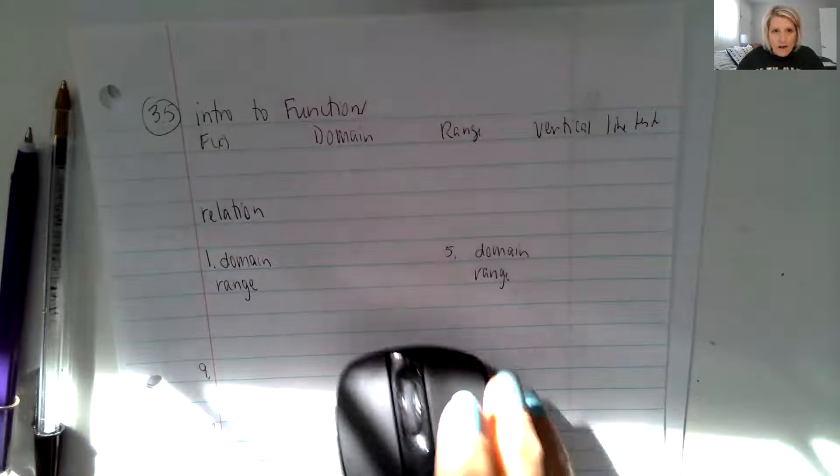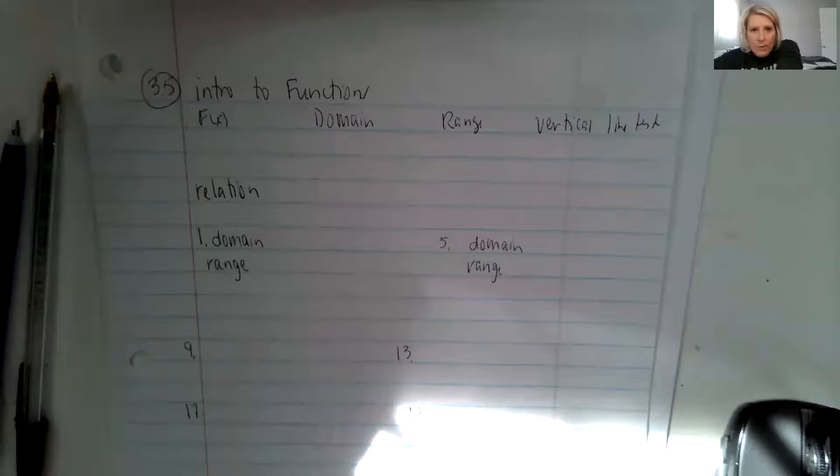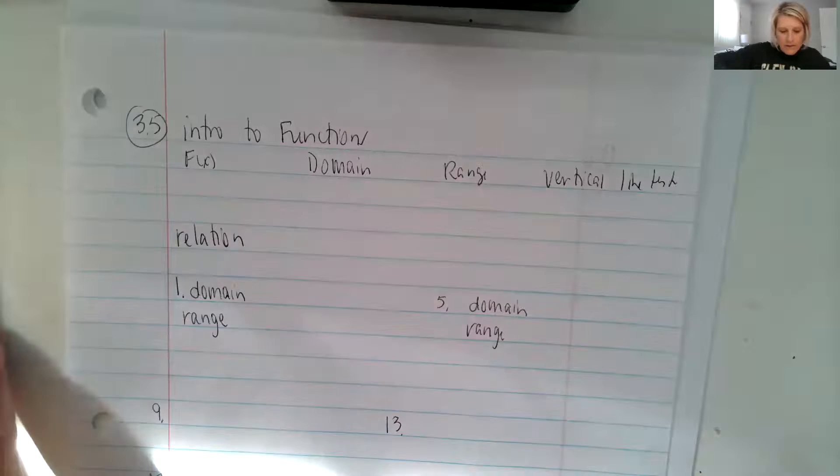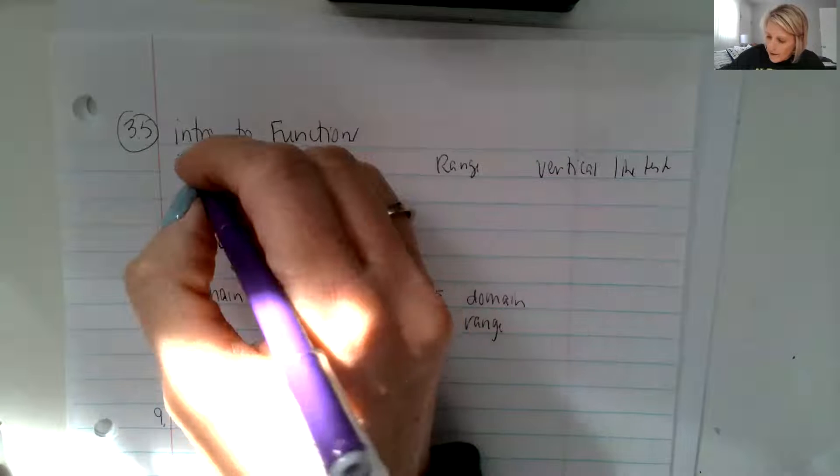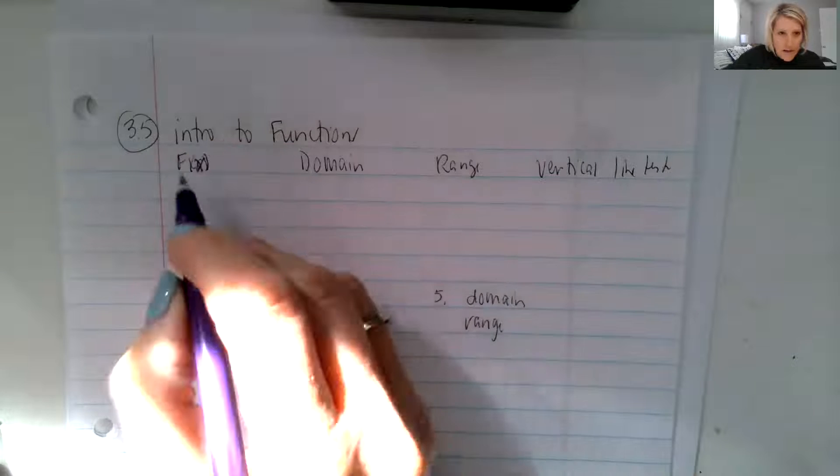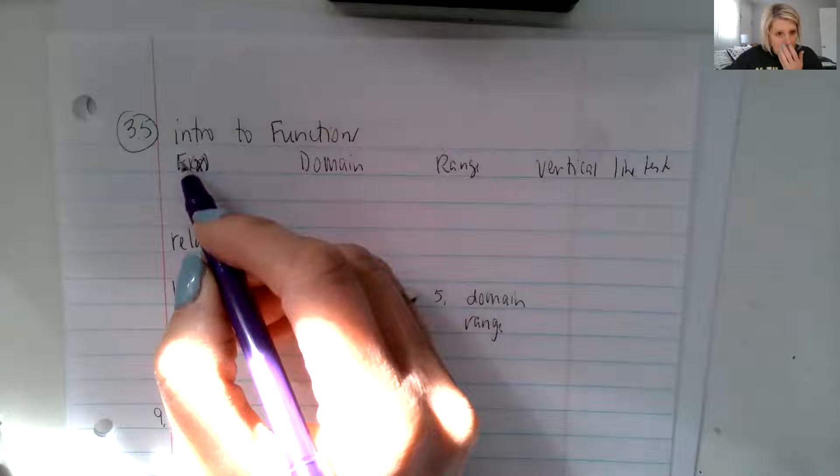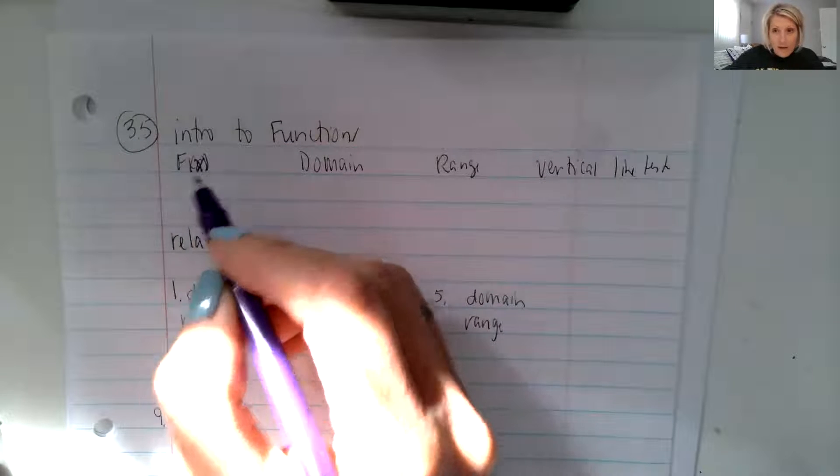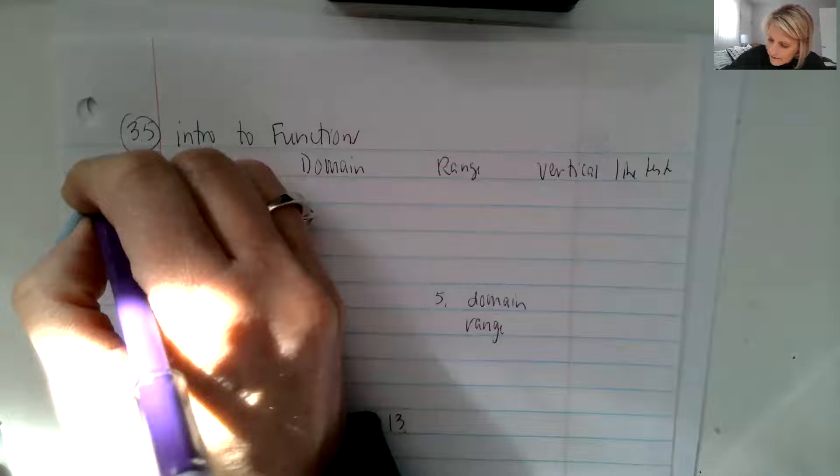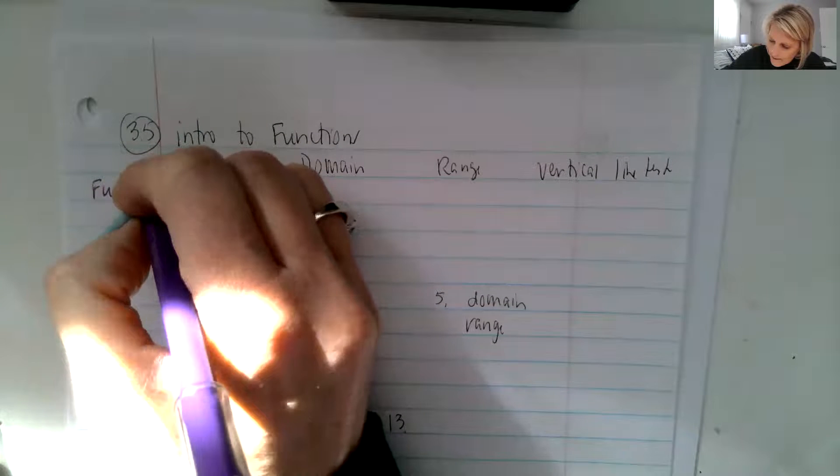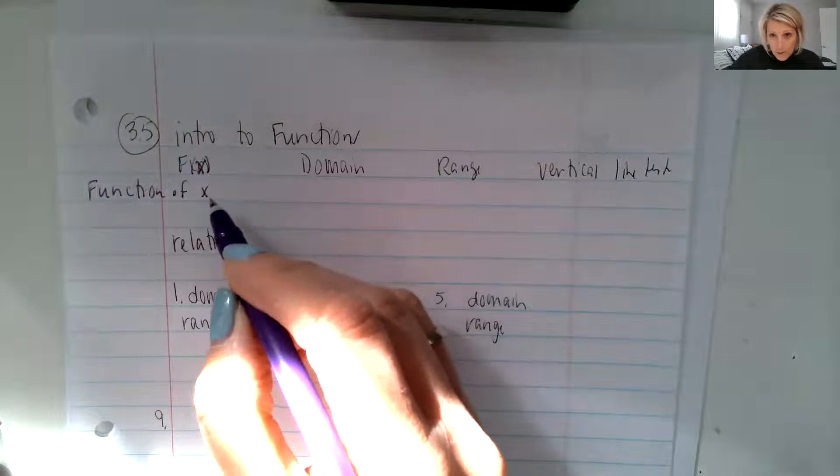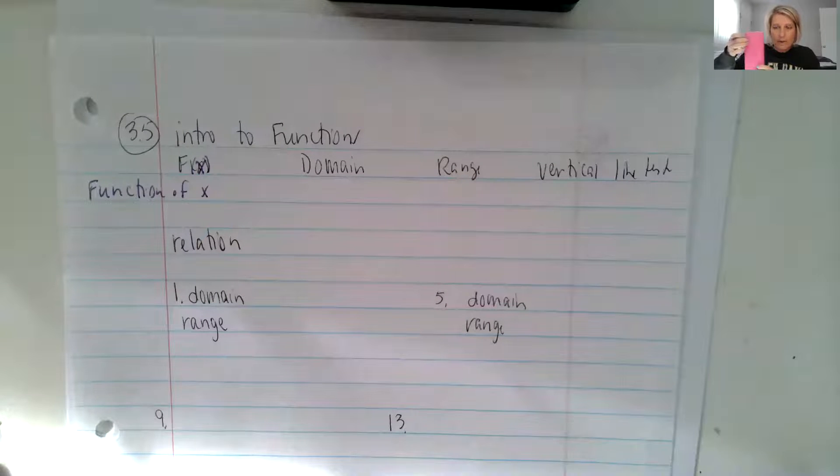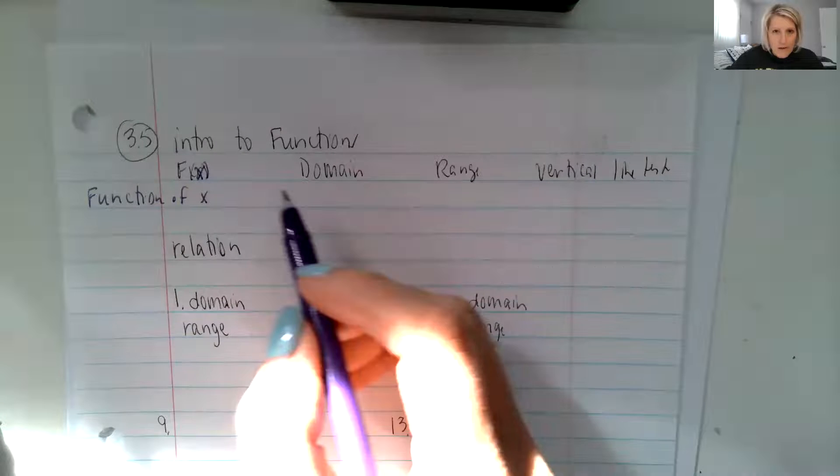And so we always define functions with the name of the function, so a capital letter. And in this case, my function is F. And this is called the function of X. Meaning X is my input, X is like the pink material that goes in to make my plastic calculator cover.